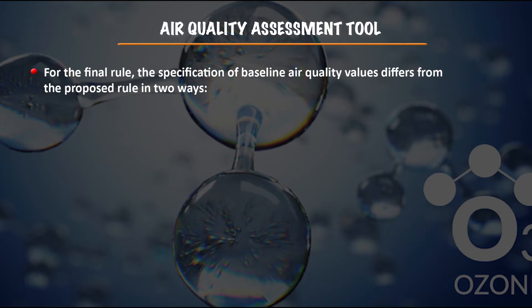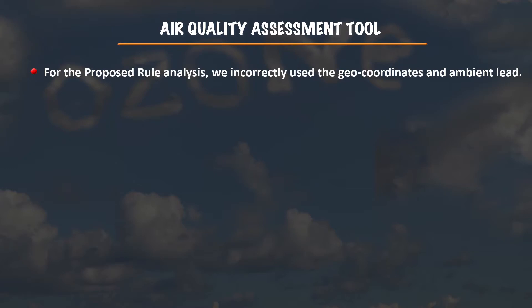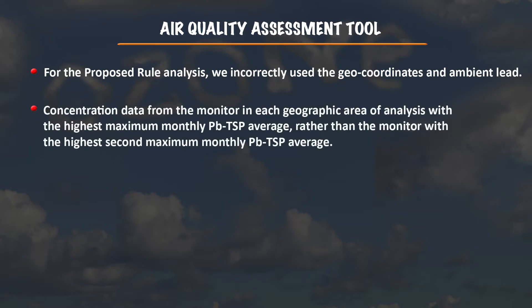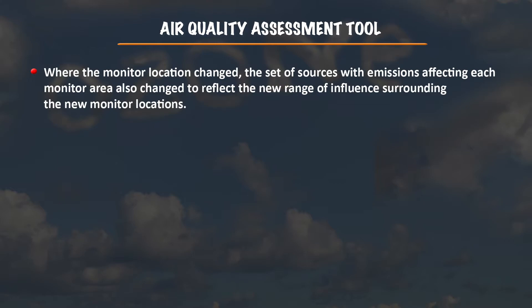The baseline air quality values for the final rule differ from the proposed rule in two key ways. First, monitor geo-coordinates and ambient lead concentration data were adjusted to reflect the air quality monitor with the limiting value based on the second maximum monthly average of lead concentrations. For the proposed rule analysis, geo-coordinates and data from the monitor with the highest maximum monthly average were incorrectly used, rather than the monitor with the highest second maximum monthly average.